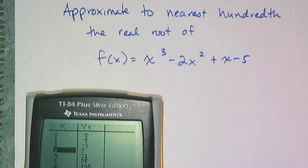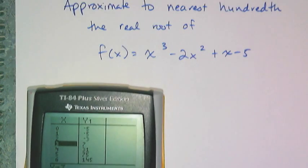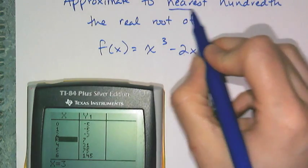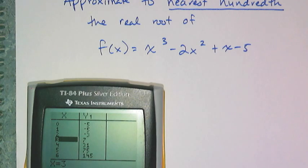So I go to my table and I can verify by the intermediate value theorem, since it goes from negative to positive, that it is indeed between 2 and 3.